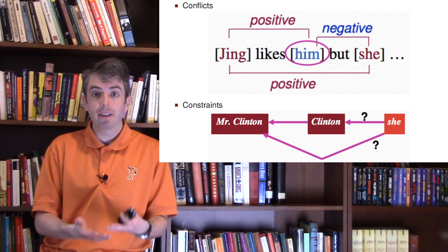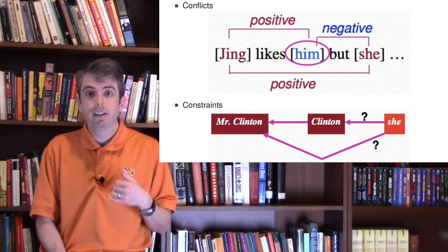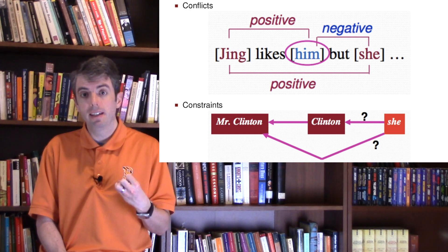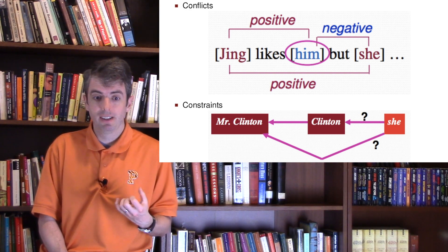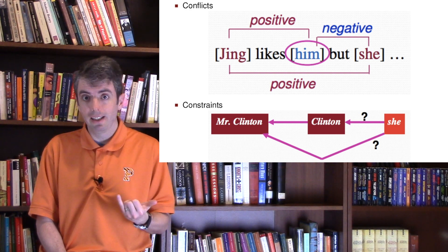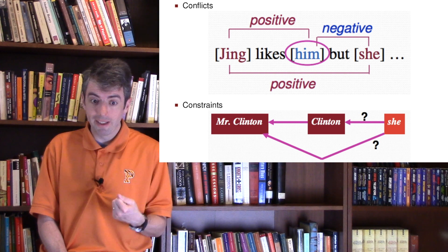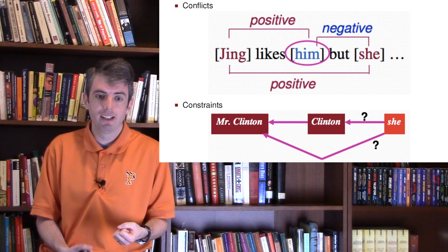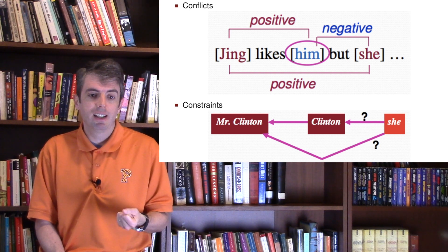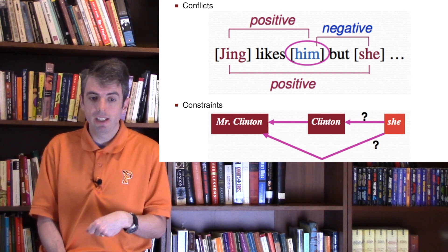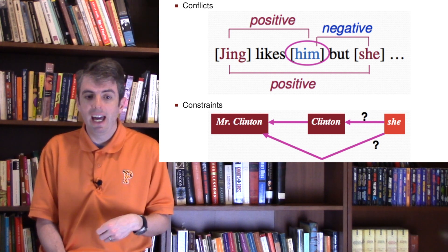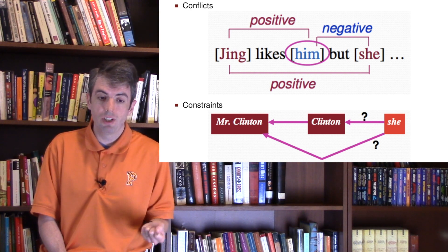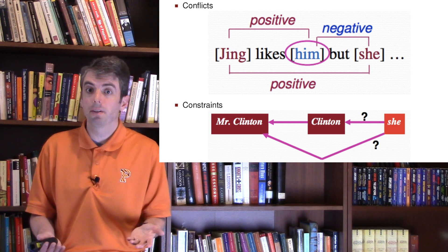The problem with pairwise coreference is that you often have triangles — you might solve pronoun references locally in a way that's locally consistent but globally inconsistent. For example, you could say 'Jing likes him, but she...' and if 'him' is coreferent to both Jing and 'she', that's a problem.